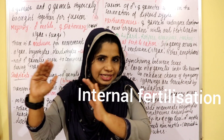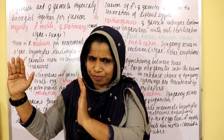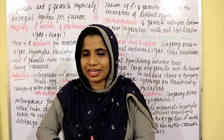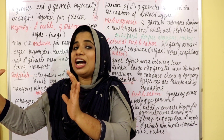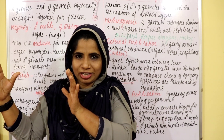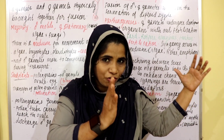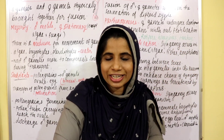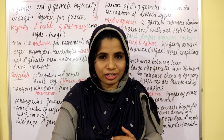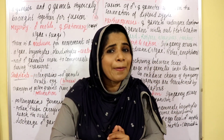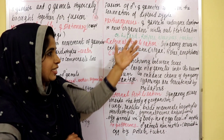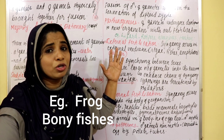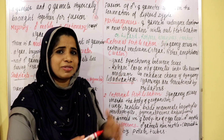There are two types: internal fertilization and external fertilization. In external fertilization, syngamy occurs in an external medium — in most cases, that external medium is water.